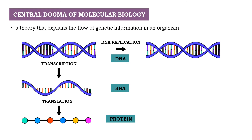The theory stated that genetic information passes in a one-way information pathway, which means that it is not possible to synthesize DNA from RNA. It is also not possible to synthesize RNA or DNA from a protein.